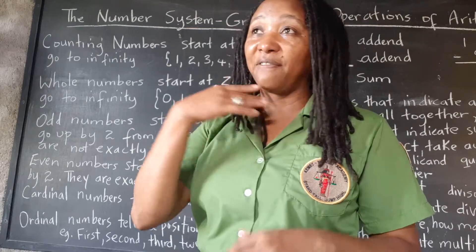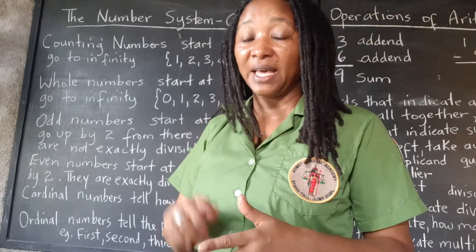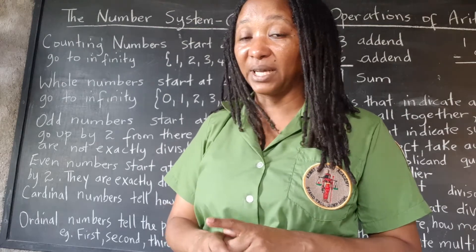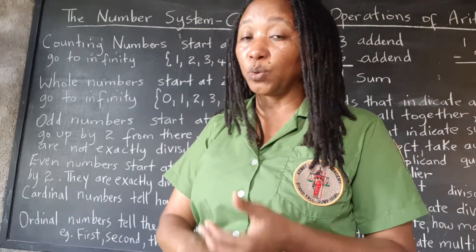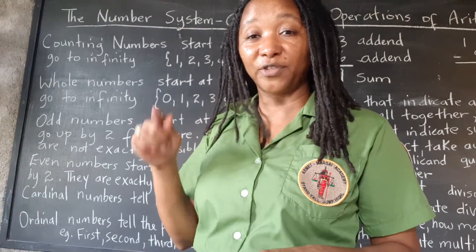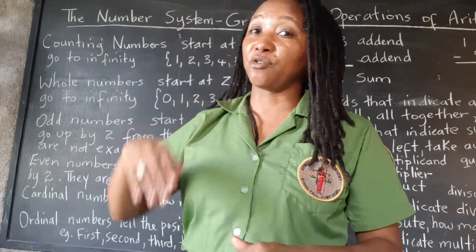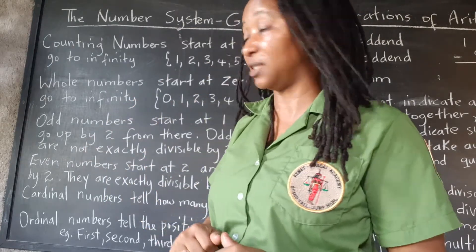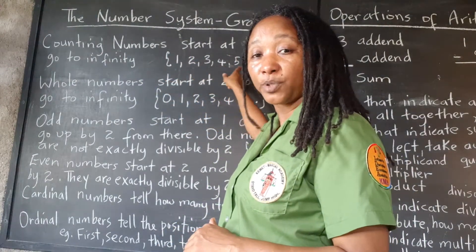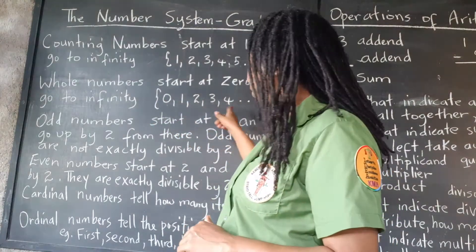If I had 5025, the zero is holding the place of the hundreds, because there is no hundred - it's 5000, two tens, five ones. Without the zero, it would be 525, which would be a totally different number. So zero is of great significance to mathematicians. Counting numbers start at one and keep going up to infinity. Whole numbers start at zero and keep going to infinity.